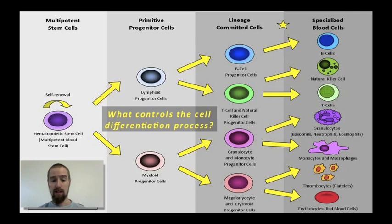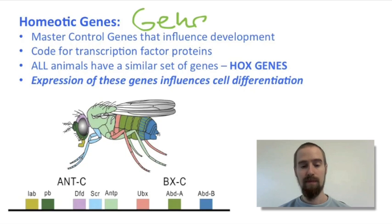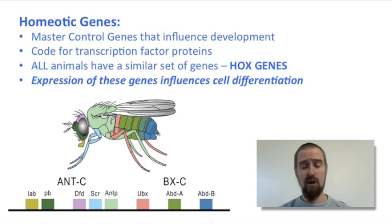But what controls this process? What makes some cells go down one road while other cells go down another? Why do some of these cells become B cells while others become white blood cells? The answer to that question is gene expression. Remember, every cell in our body has the same set of genes, but different kinds of cells express different sets of genes, meaning that they make different kinds of proteins. These proteins perform functions that ultimately determine what the cell is capable of doing. If you think of our DNA like a library, it's not as though every single cell in our body needs access to the whole library. Certain kinds of cells only use certain parts of the library and express certain genes as a result.